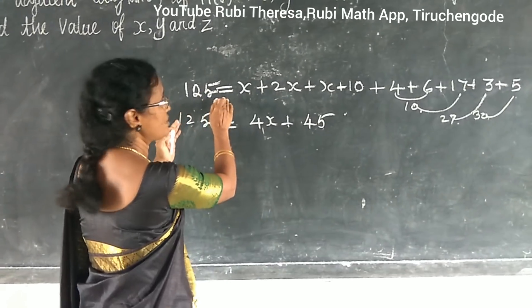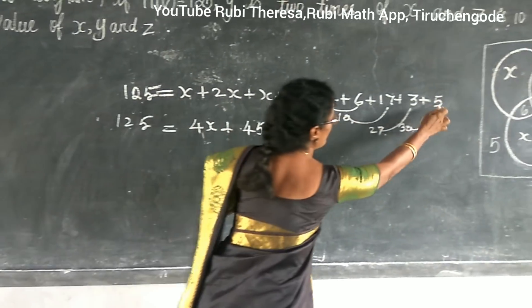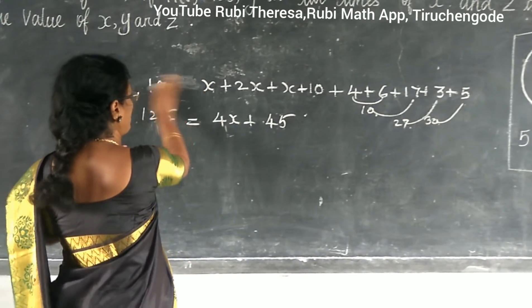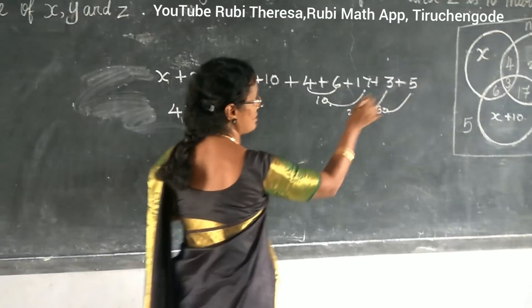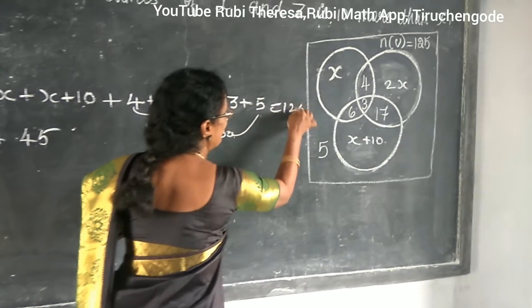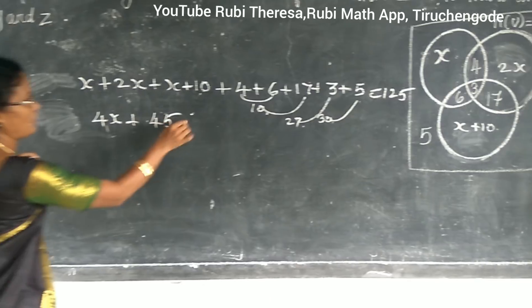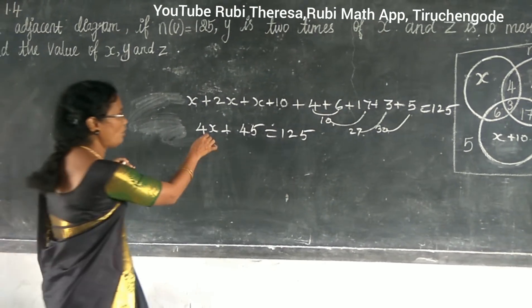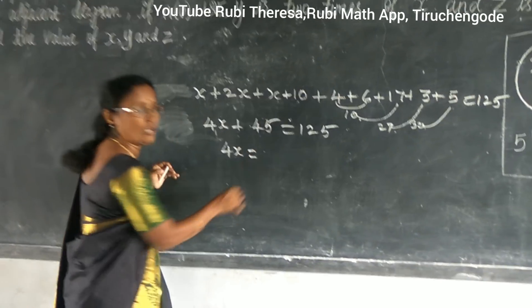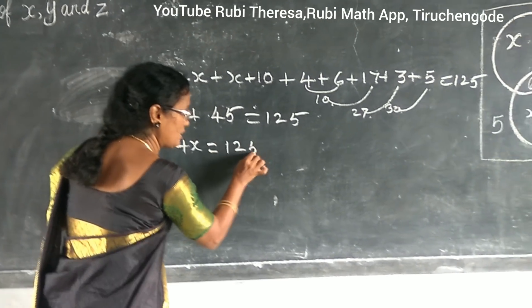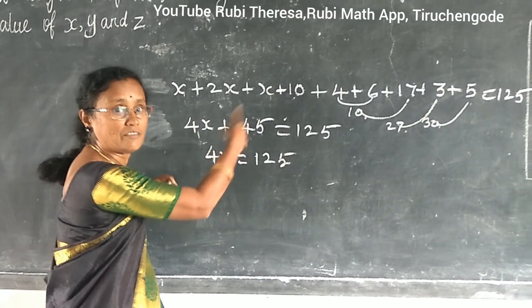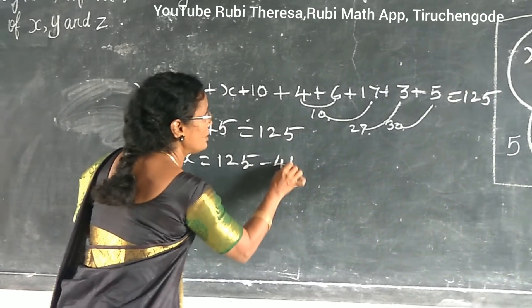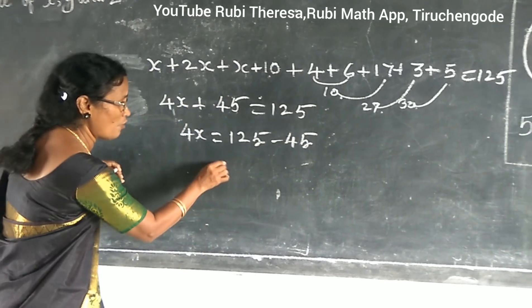Either you can equate like this or those who want to equate here also equal to 125. Equal to 125. So what is it? 4X equal to 125 minus 45. Minus 45. Very good.